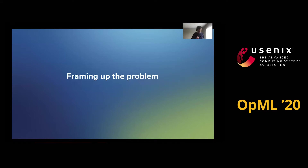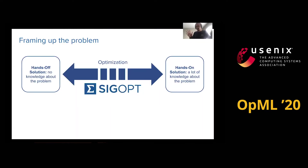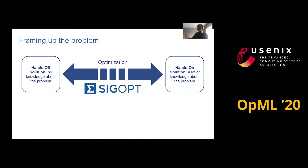Now that we are all on the same page, let's try to frame up some problems. Within optimization or black box optimization more generally, there exist a lot of different schools when it comes to what type of algorithm to use. Obviously, you have your random search, you have your grid search, and you have methods that can leverage previous observations — you have your hill climbing approaches, your genetic algorithms, Bayesian optimization, and so on and so forth.